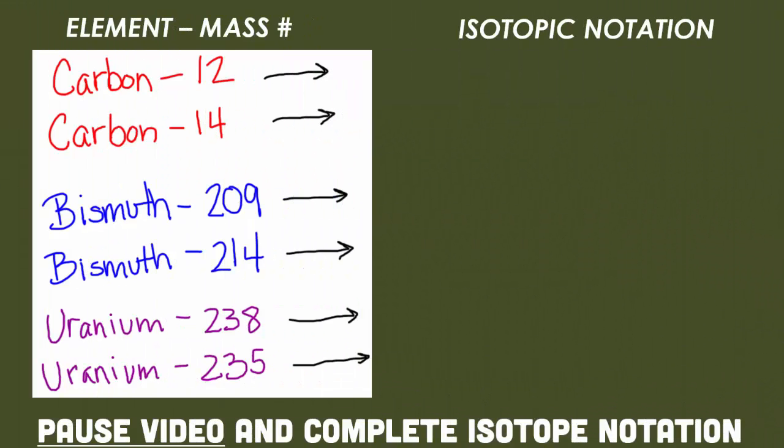Right now you'll notice that you have six different isotopes. You have carbon-12 and carbon-14 — both of them are the element and its mass number. They don't show the atomic number because it's assumed by the name of the element. Carbon has its own atomic number, as does bismuth and uranium. So right now we want you to pause the video and, using the notes you just took, write down the isotopic notation for the carbons, the bismuth, and the uranium isotopes.